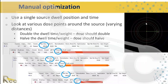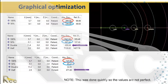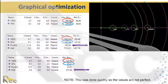After verifying dose points, increase the dwell weight and confirm dose increases at the same point; decrease the weight and confirm dose decreases. Then move the point — double the distance and observe the dose change, halve the distance and observe the dose change, confirming inverse square law behavior. For graphical optimization verification, place points at various isodose lines and verify the planning system doses against manual TG-43 calculations.